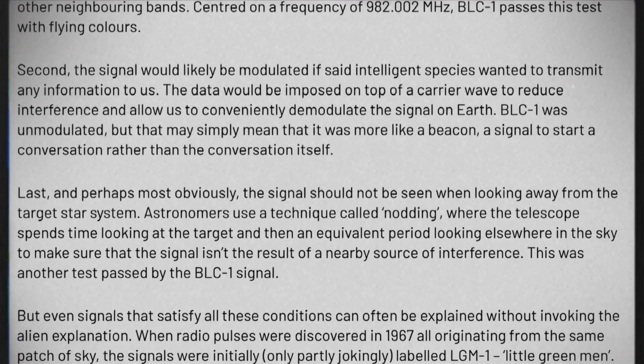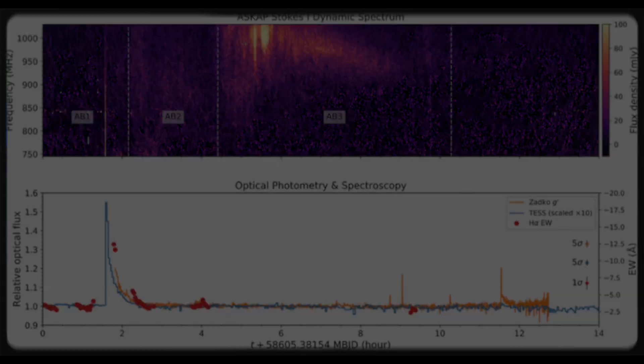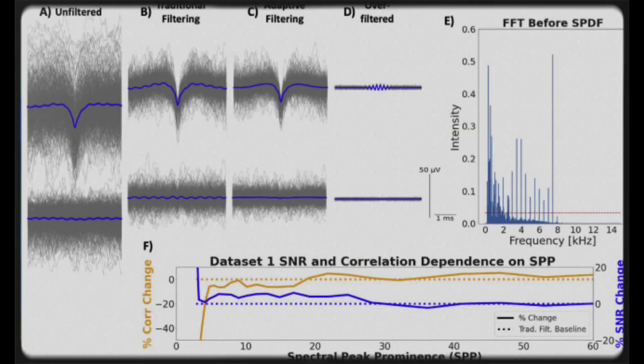The second requirement was that the frequency must change in line with the relative motion of the exoplanet to Earth. Scientists had analyzed nearly 4 million signals detected by the telescope in Australia. After extensive filtering and eliminating unnecessary signals, they were left with 5,000 distinct candidates.